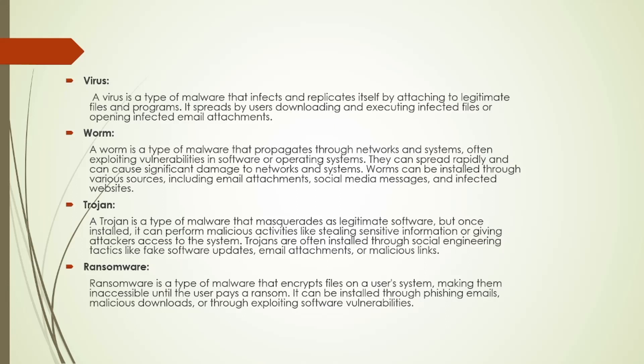Worm: A worm is a type of malware that propagates through networks and systems, often exploiting vulnerabilities in software or operating systems. They can spread rapidly and cause significant damage. Worms can be installed through various sources, including email attachments, social media messages, and infected websites.